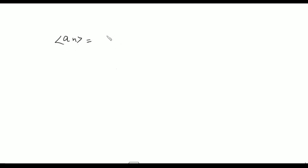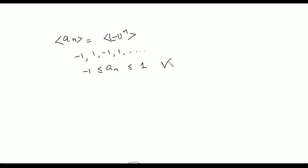Now let's check whether the sequence a_n = -1, 1, -1, 1, 1, ... is bounded or not. This whole sequence is lying between the numbers -1 and +1, and this is true for each n. Therefore this sequence has a lower bound as well as an upper bound, so this sequence is bounded.